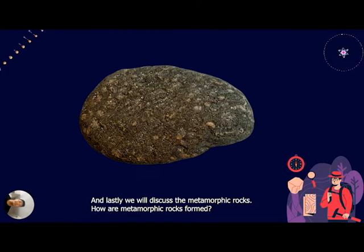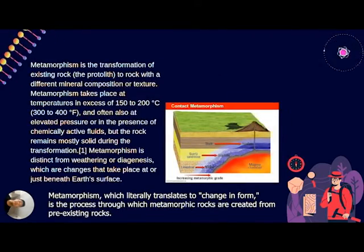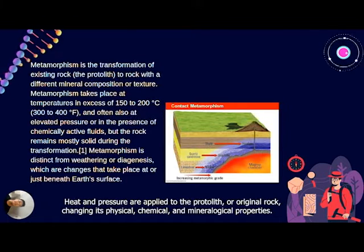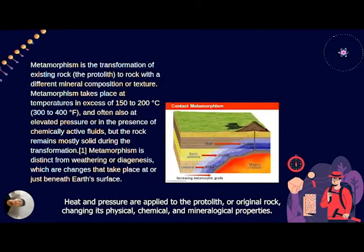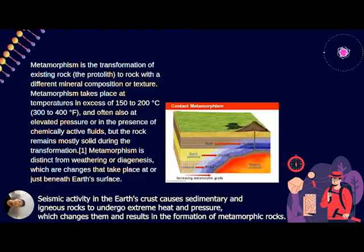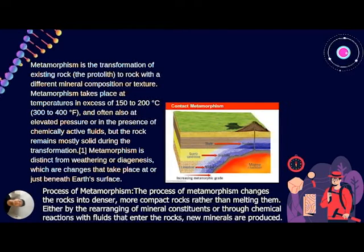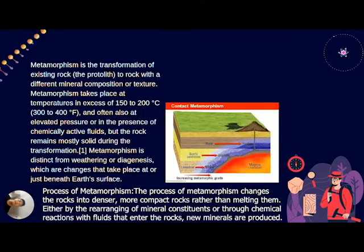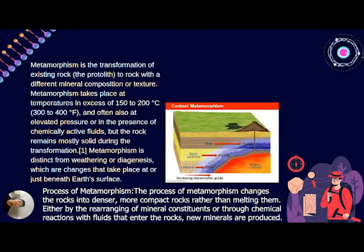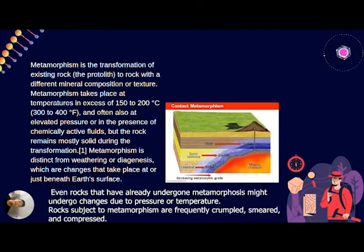Lastly, we will discuss metamorphic rocks. Metamorphosis, which literally translates to 'change in form,' is the process through which metamorphic rocks are created from pre-existing rock. Heat and pressure are applied to the protolith or original rock, changing its physical, chemical, and mineralogical properties. Seismic activity in the Earth's crust causes sedimentary and igneous rocks to undergo extreme heat and pressure, resulting in metamorphic rocks. The process of metamorphism changes rocks into denser, more compact rocks — either by rearranging mineral constituents or through chemical reactions with fluids. New minerals are produced, and rocks that have already undergone metamorphism may change again due to pressure or temperature.